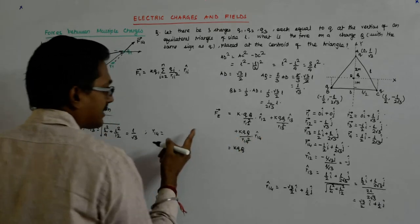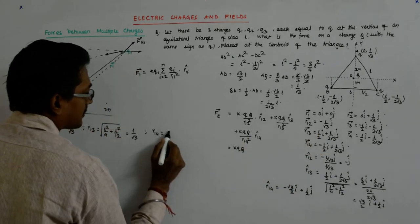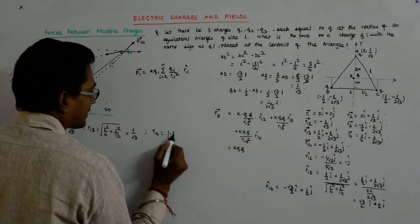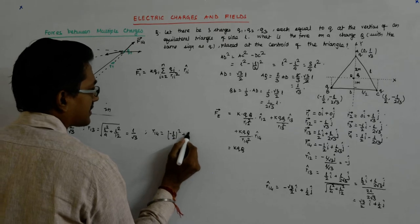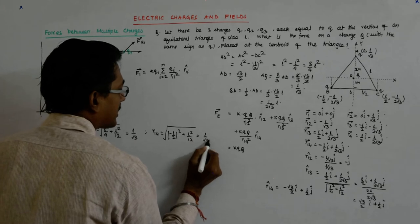R14 is again the same thing, just this is negative, otherwise it is the same, so it actually becomes minus L by 2 whole square plus L square by 12 root over, that becomes L by root 3.